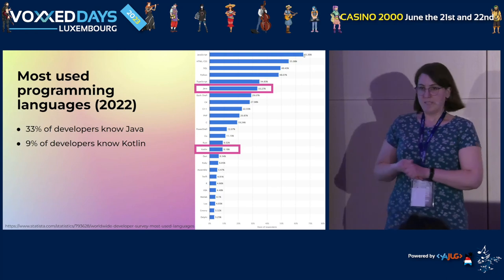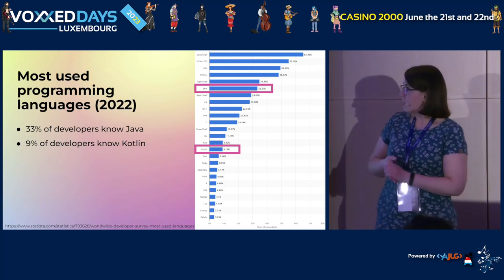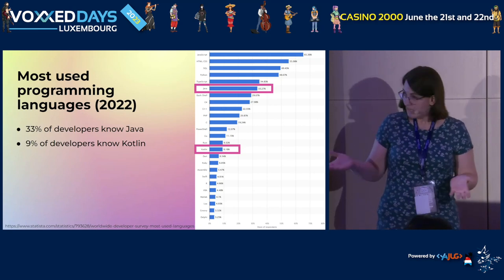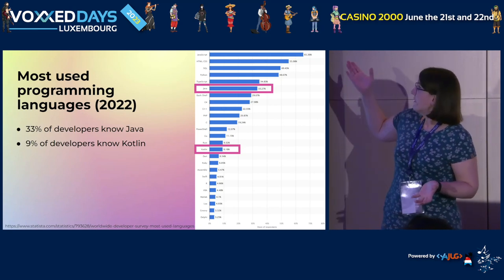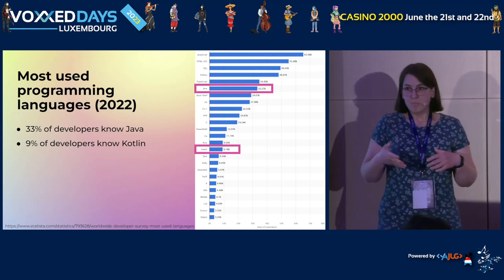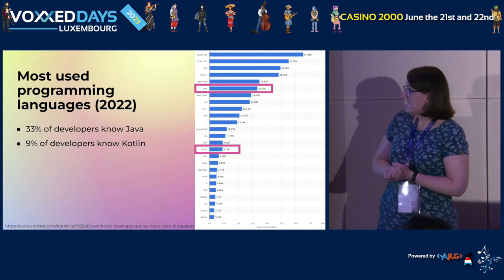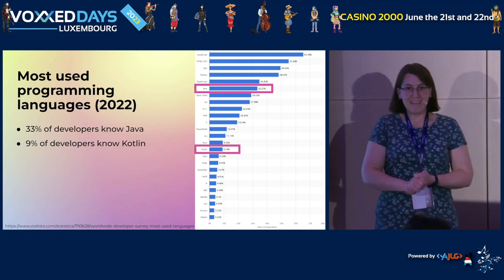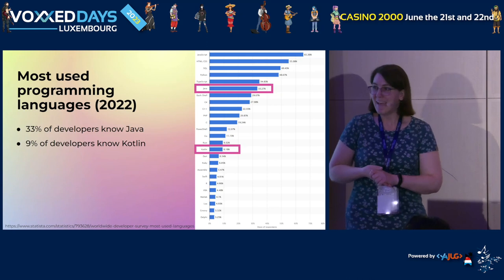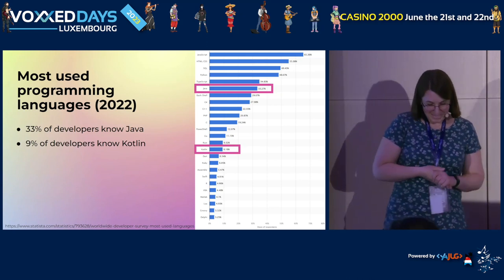So what is the current state? Looking at the most used programming languages from last year, about a third of developers say they know Java. Less than 10% say they know Kotlin, and my goal is to pump up these numbers a bit. It's fantastic that you're here for this.